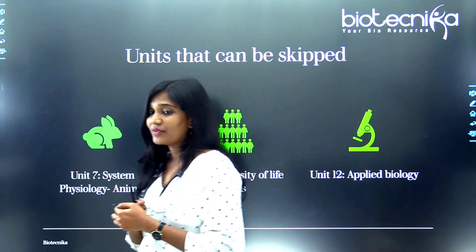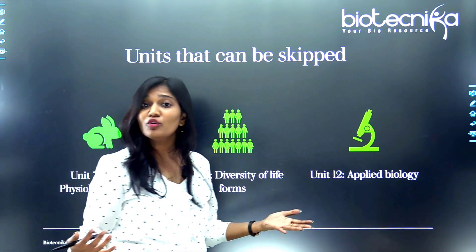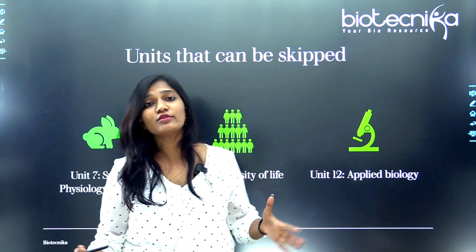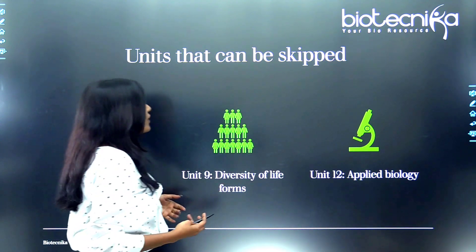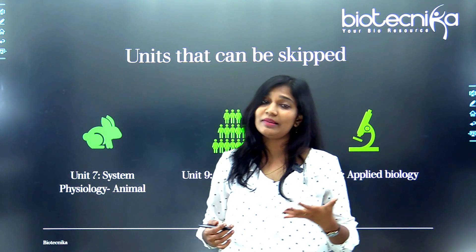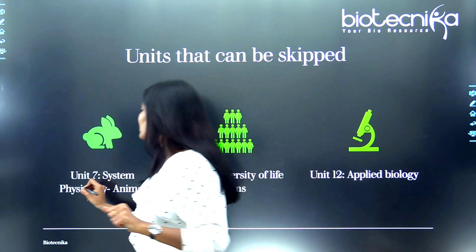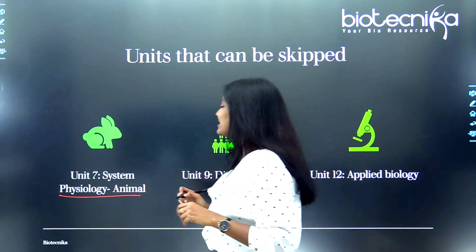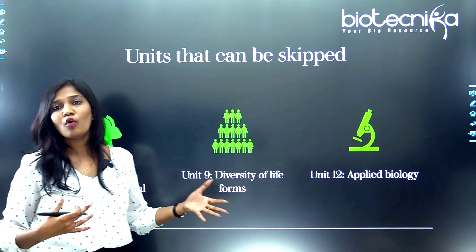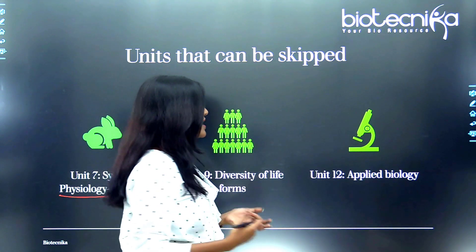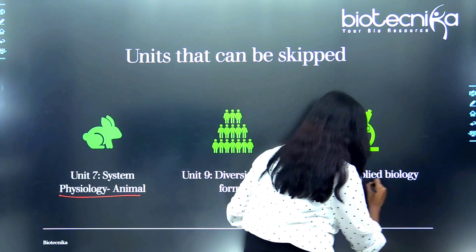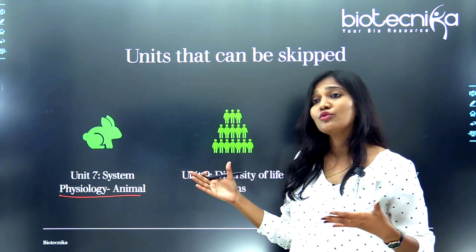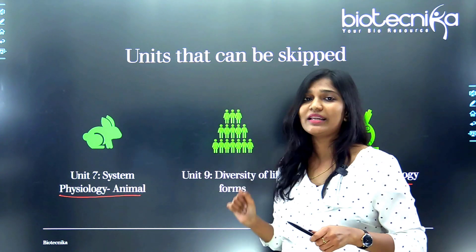Can I skip some units? Yes — you're concentrating on only 10. The units you can skip are: if you're studying plant physiology, you can skip animal physiology. You can also skip diversity of life forms, which has very few questions. And unit twelve, applied biology, can also be skipped because it has a very small number of questions.